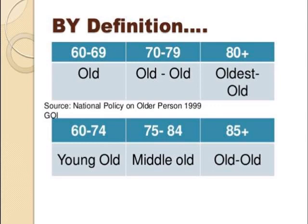So who is considered as old? According to the National Policy of Older Persons of Government of India, passed in 1999, the person in the age group of 60 to 69 is considered old, 70 to 79 is old-old, and 80 plus is oldest-old.